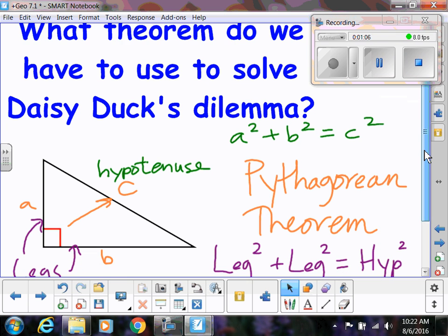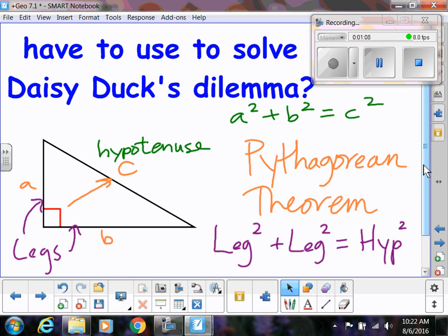I've seen this before, I know, but a reminder, Pythagorean theorem, that's the one that says a squared plus b squared equals c squared. Another way of saying that is leg squared plus leg squared equals hypotenuse squared. So reminder about some vocabulary.